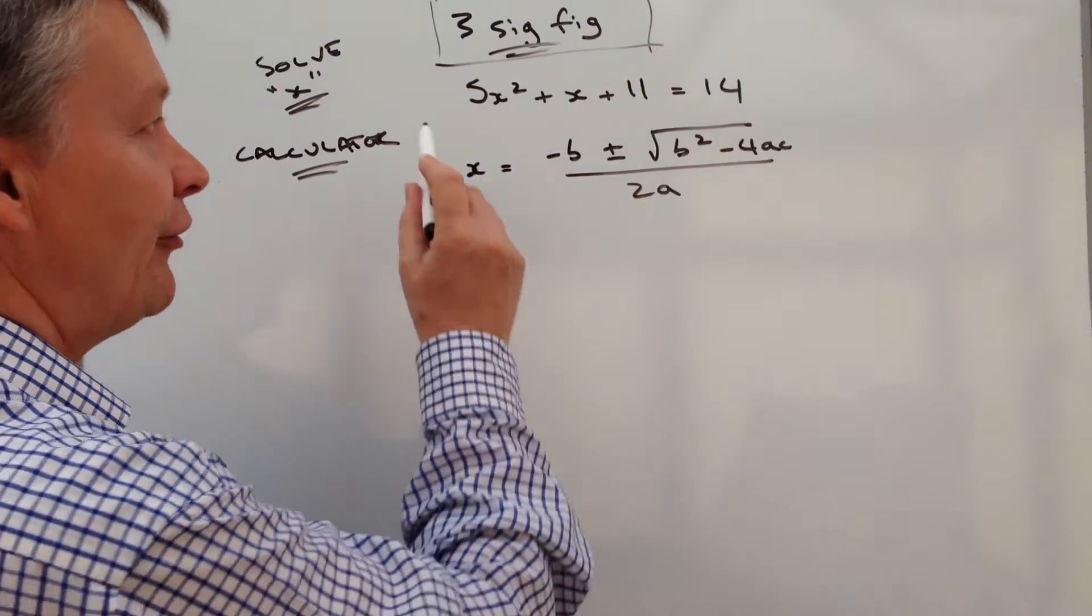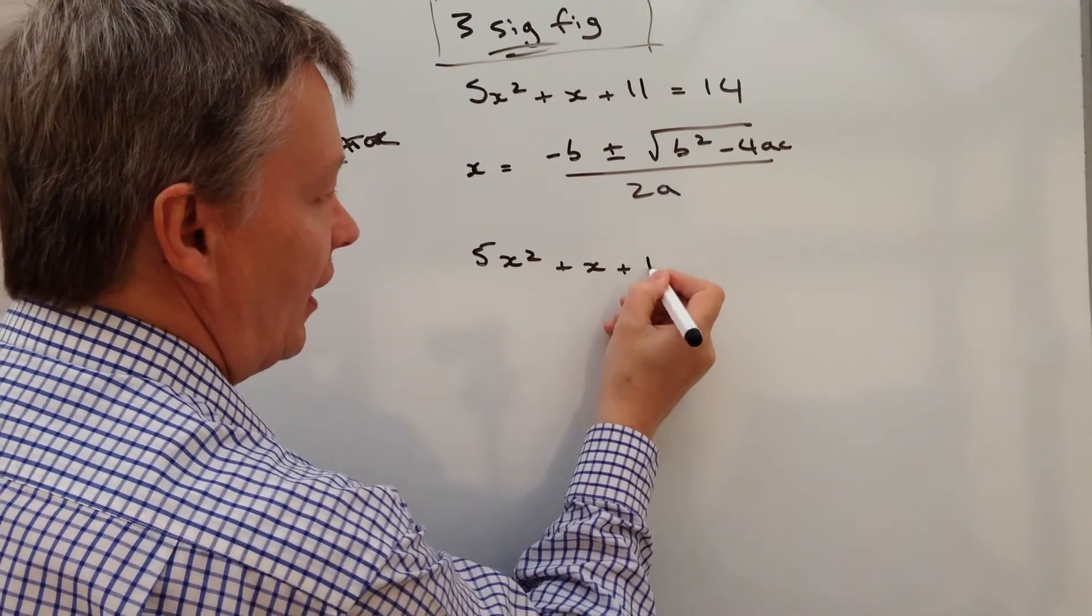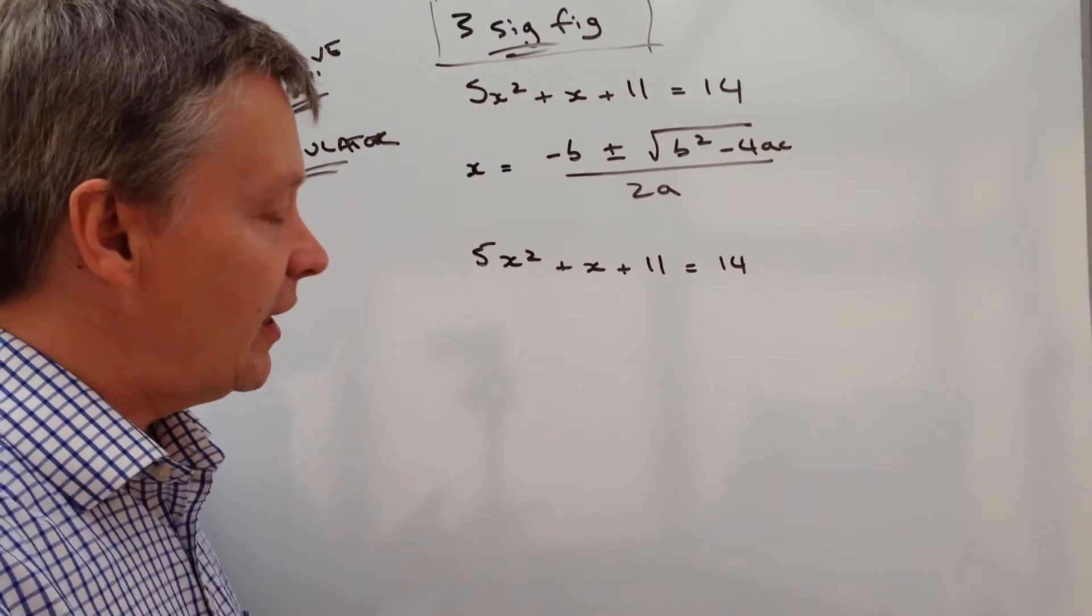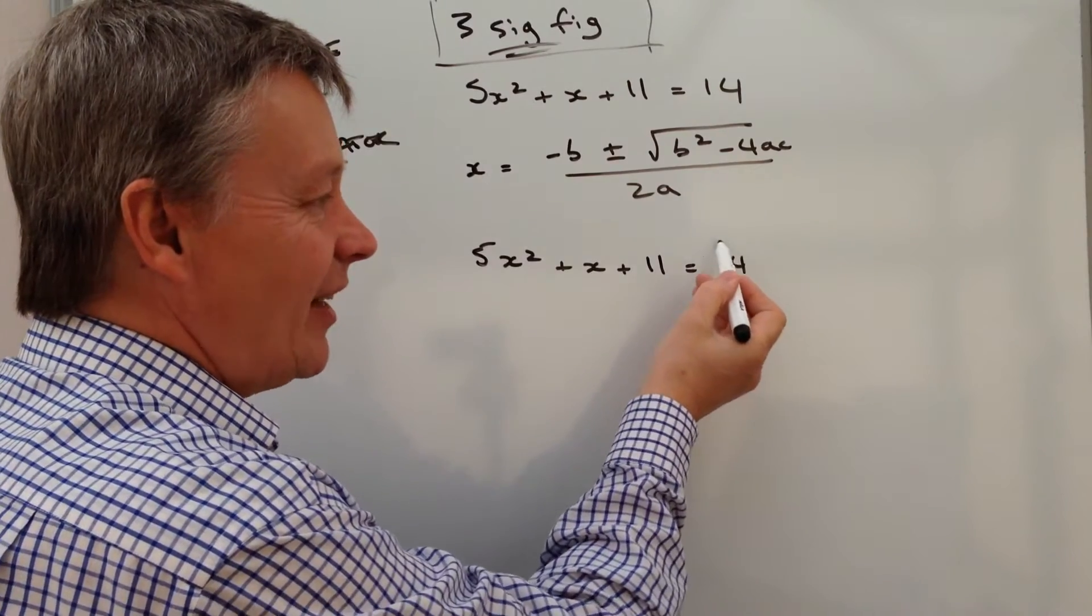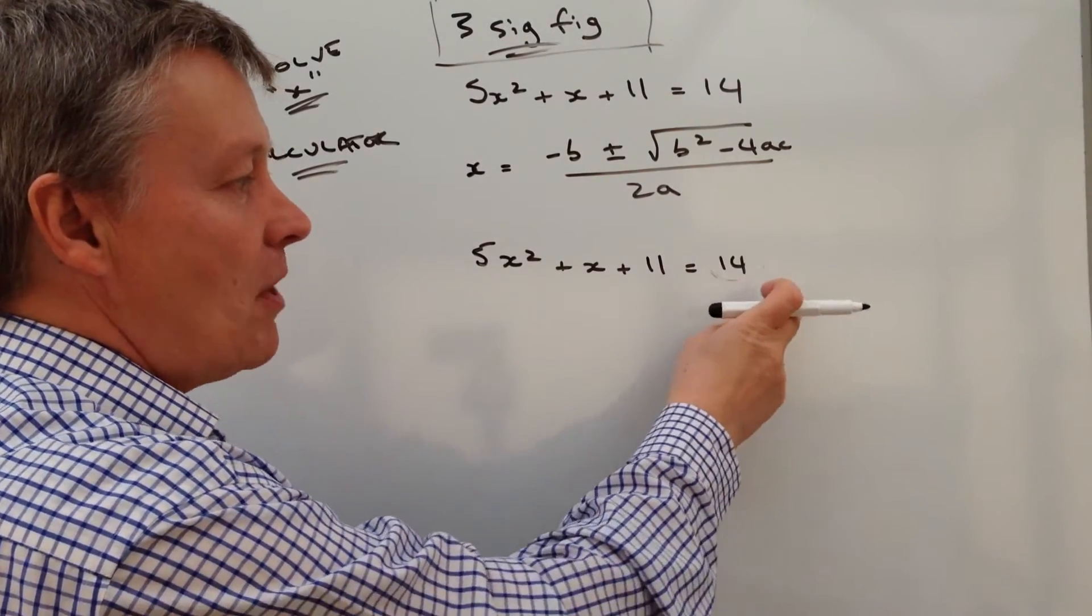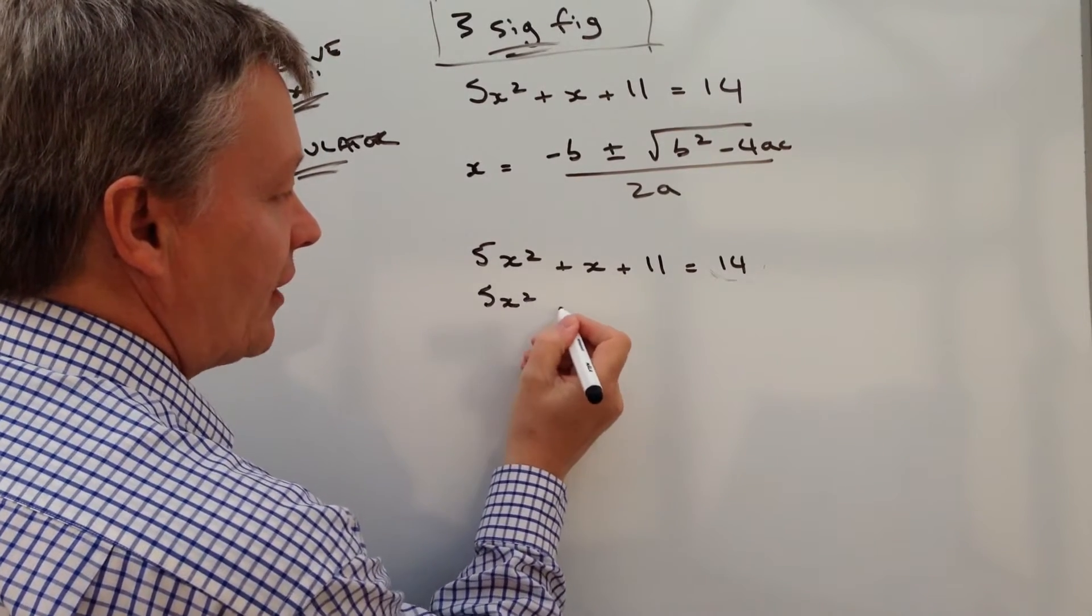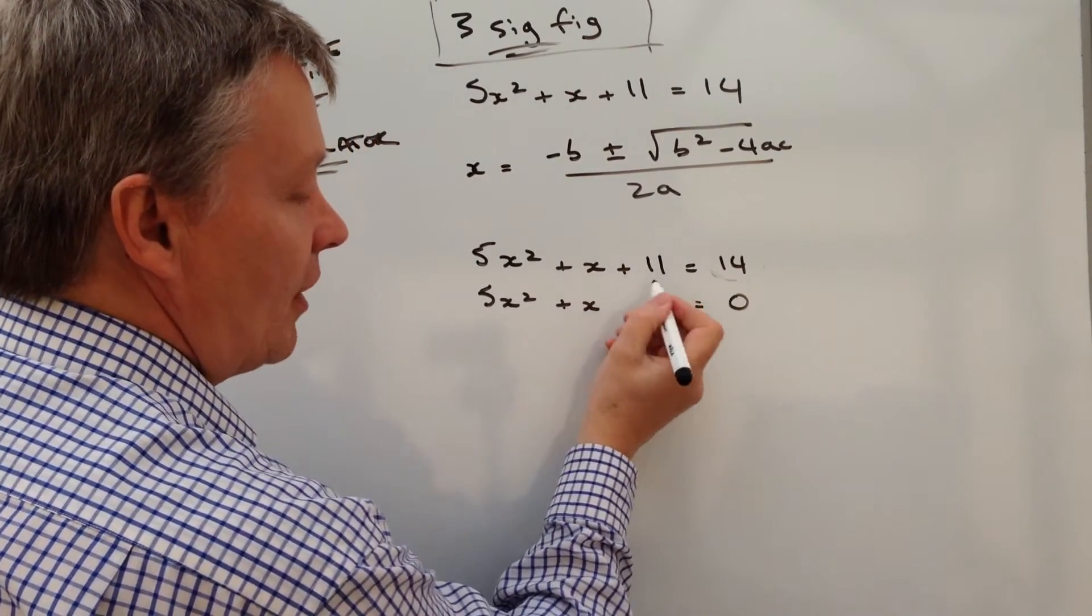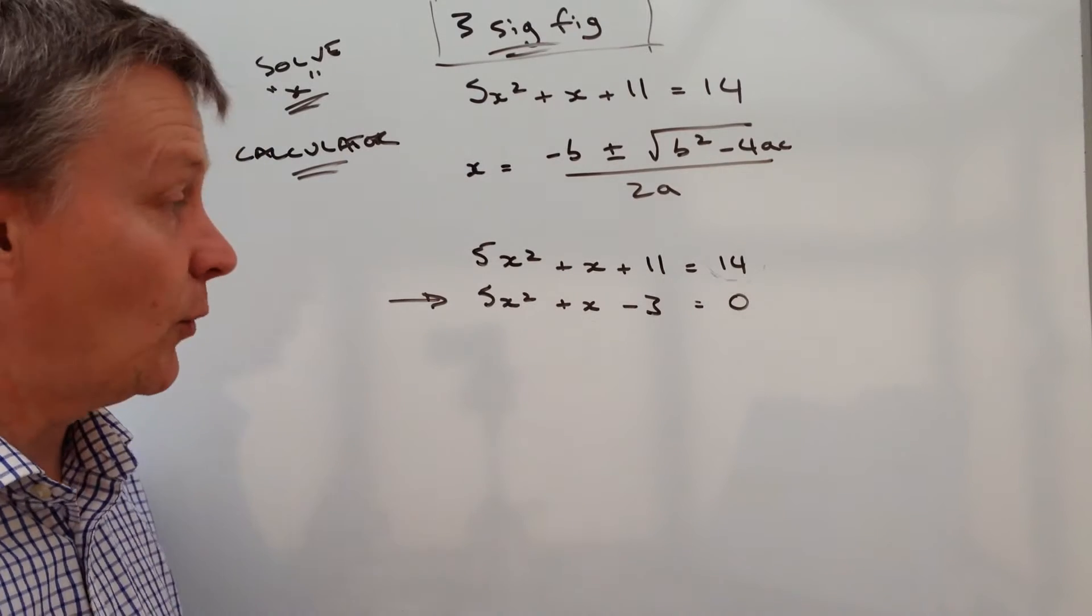The first thing is if we look at the formula, we've got 5x² + x + 11 = 14. The problem is that's not in the correct form for solving this type of equation. We need it to equal zero. So I'm going to minus 14 from both sides. It becomes 5x² + x - 3 = 0, and this is the correct format we need for the quadratic formula.